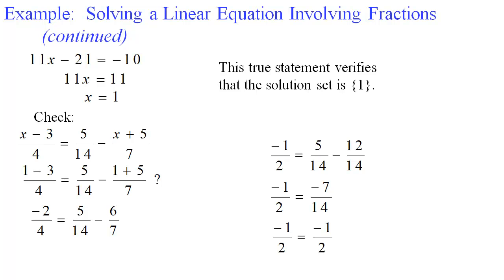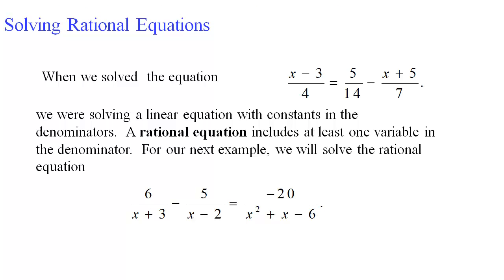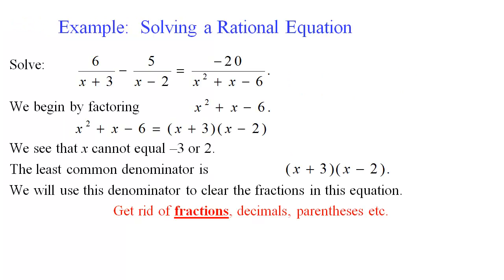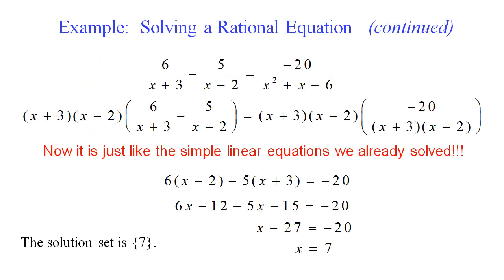Now that we know how to solve linear equations with fractions, we bump it up a notch to rational equations — just a fancy term for fractions that have variables in the denominator. We factor the denominators to find the least common denominator, then multiply through to clear the fractions. In this example the right-hand side is composed of the same factors as the left, so multiplying through by (x+3)(x−2) kills off all fractions at once.